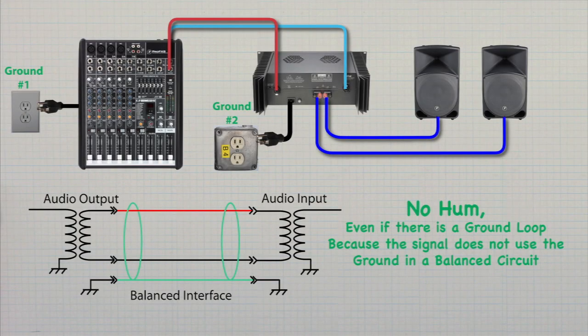Here is a typical example with an audio board that is plugged into an outlet which uses ground number one, and the audio amp which is plugged into an outlet that uses ground number two. Even with the ground potential difference between the outlets, there is no ground loop hum because a balanced connection is used between the two.